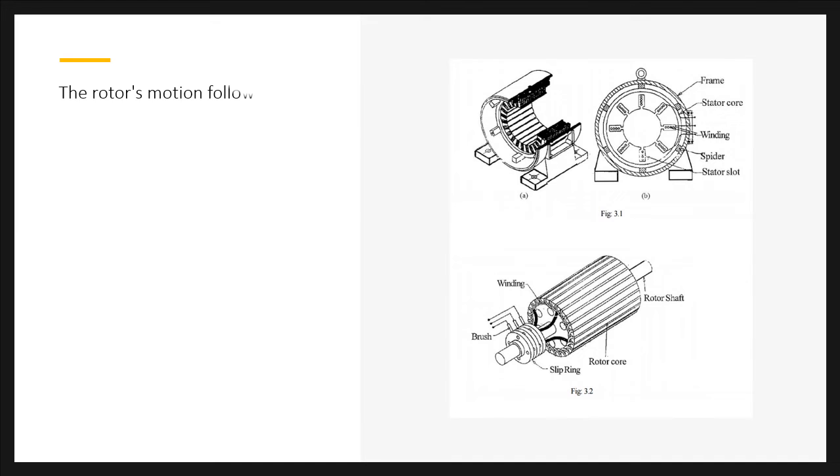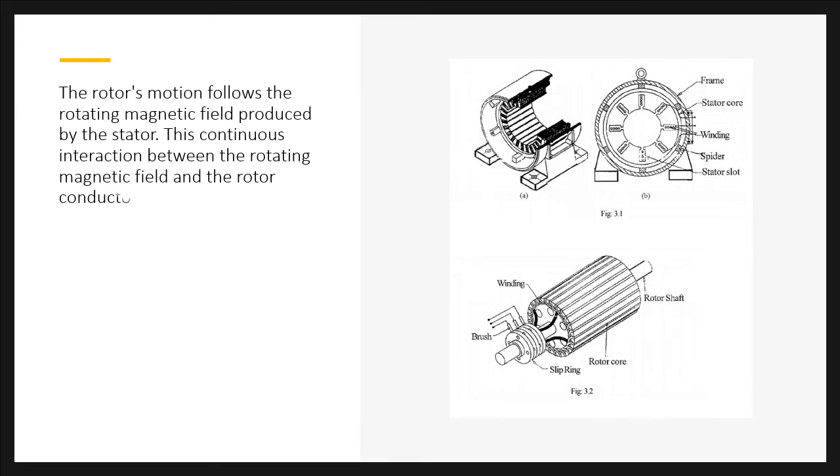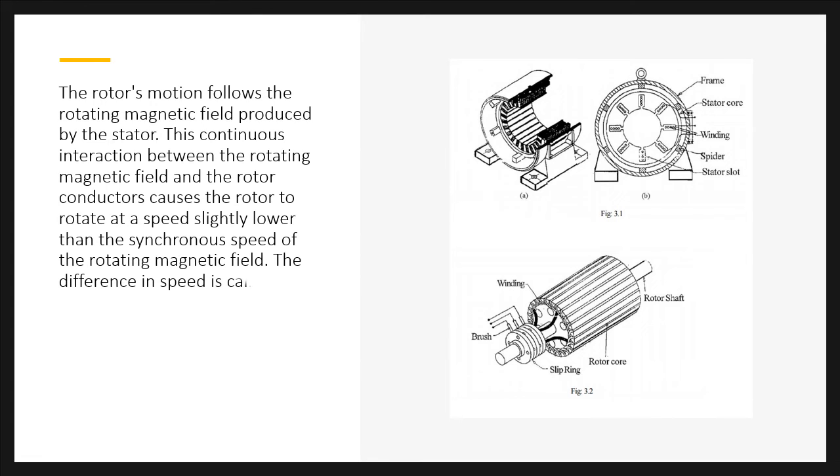The rotor's motion follows the rotating magnetic field produced by the stator. This continuous interaction between the rotating magnetic field and the rotor conductors causes the rotor to rotate at a speed slightly lower than the synchronous speed of the rotating magnetic field. The difference in speed is called slip.